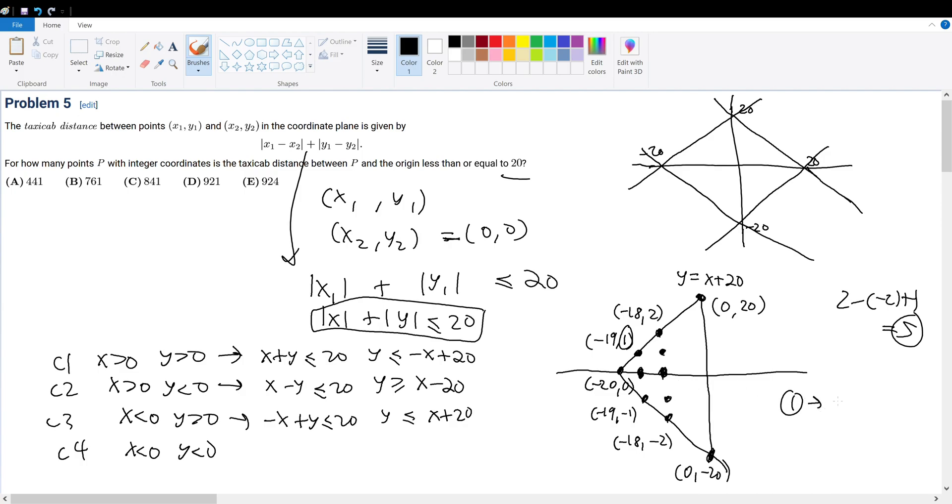We have 1 point, then we have 3 points, then we have 5 points. Then we have 1, 2, 3, you have 5 points, then how many points do we have from here to here? Well, that's just 20 minus negative 20 plus 1. So that's equal to 41. So it's 1 + 3 + 5 + all the way up to 41. That's the number of integer points that satisfy the given criteria for a taxicab distance.